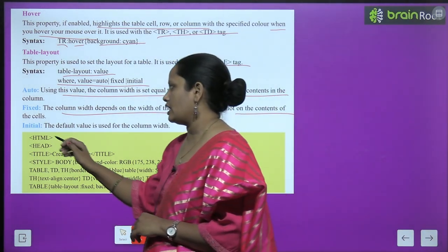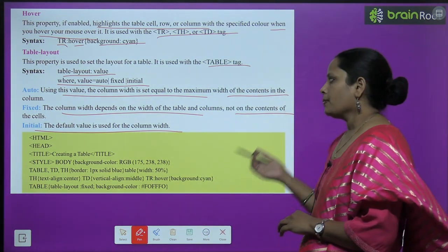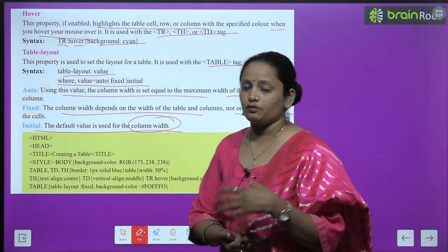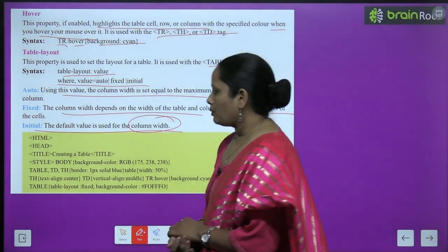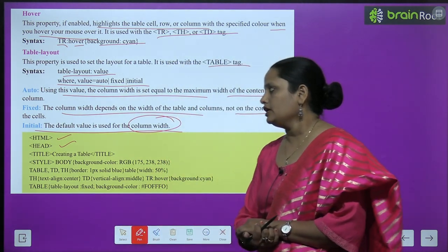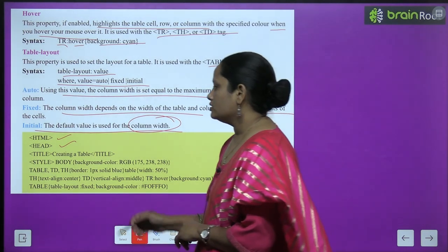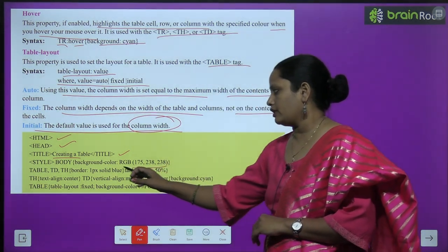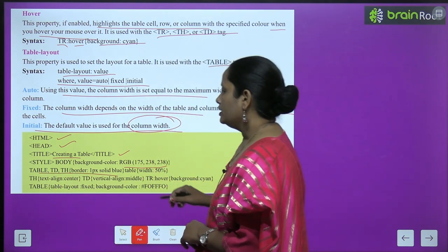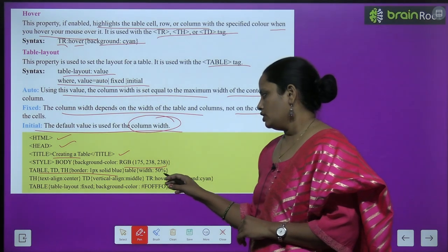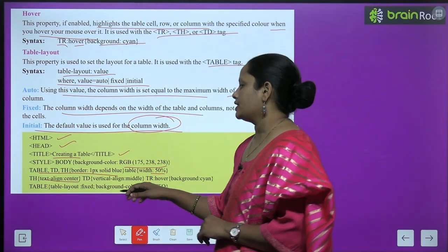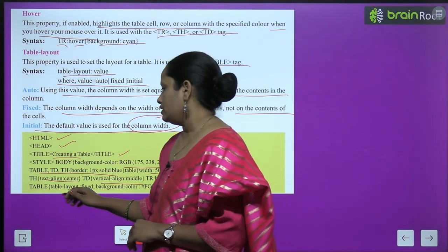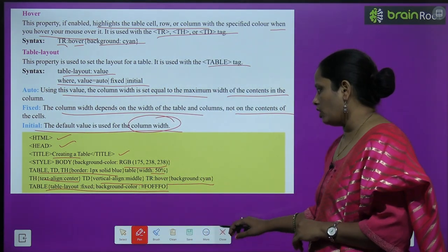Initial means the default value is used for the column width. In the code example, we type HTML, then head open, title 'Creating a Table', close title, style with body background color, table/td/th with border 1px solid blue, width 50%, text-align center, td vertical-align middle, tr:hover background color, and table-layout fix. After typing all these commands in notepad and creating the table, the web page shows tables with table-layout fix and table-layout auto. You can see the difference between the two.